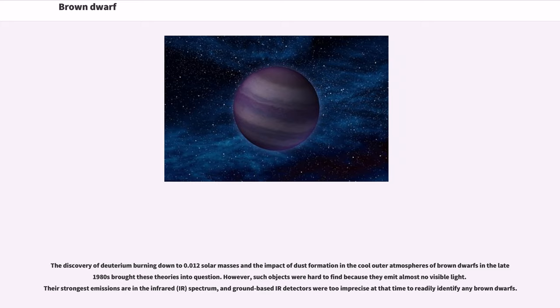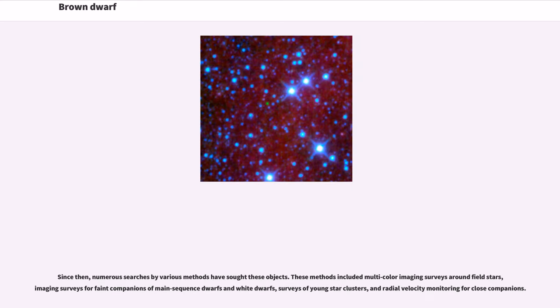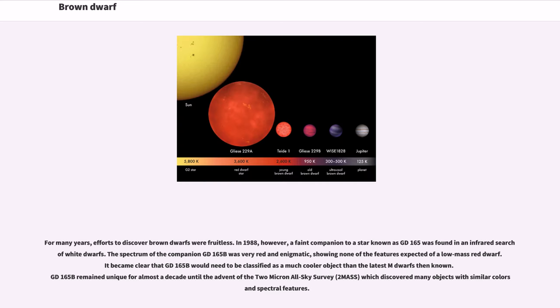The discovery of deuterium burning down to 0.012 solar masses and the impact of dust formation in the cool outer atmospheres of brown dwarfs in the late 1980s brought these theories into question. However, such objects were hard to find because they emit almost no visible light. Their strongest emissions are in the infrared spectrum, and ground-based IR detectors were too imprecise at that time. Since then, numerous searches by various methods have sought these objects.